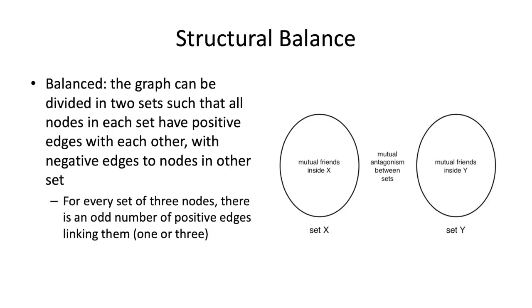That means if you go through this triangle A, B, and C, there has to be either three positive edges, meaning they're all friends, or there needs to be an odd number, meaning there's one positive edge. So maybe A and B are joined together, and then there needs to be two negative edges, so A and C negative, B and C negative, meaning there's mutual antagonism between the two sets.